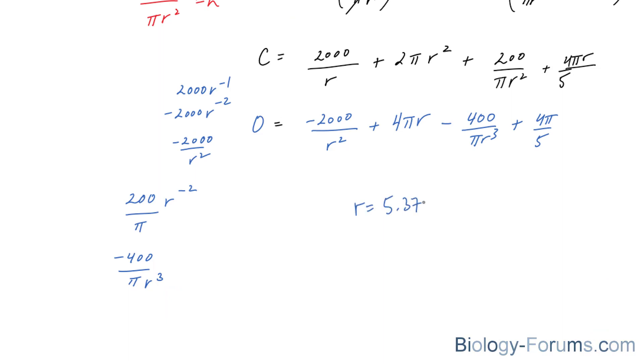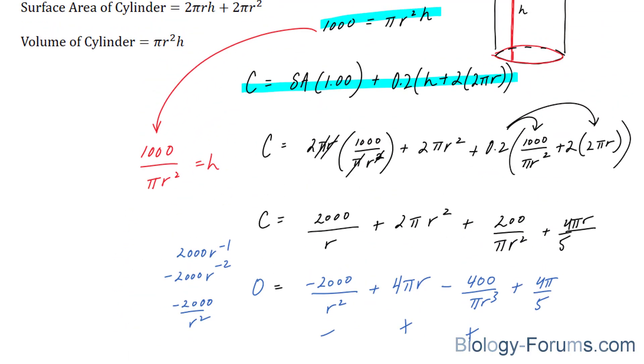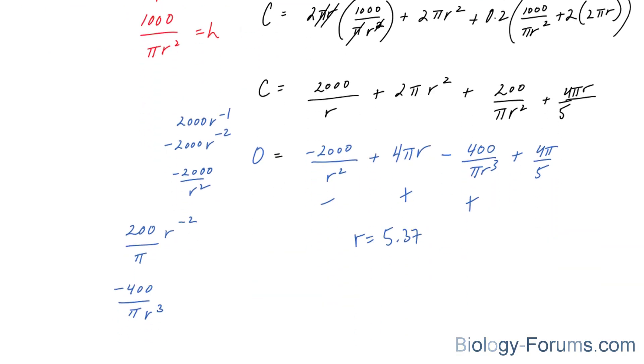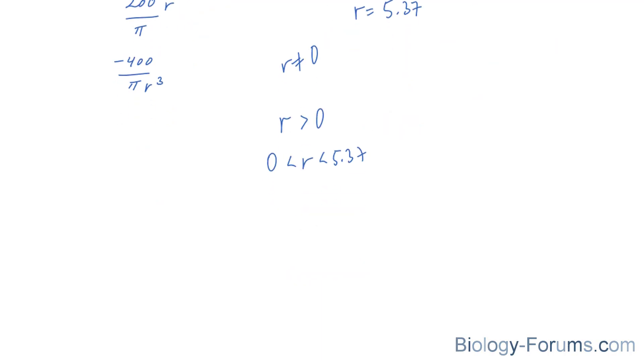That said, we can now find whether it is going to be a local minimum or a maximum. Keep in mind that there were restrictions in the original equation for C. The original equation for C looked like this, and according to this term, r cannot equal 0. We must also keep that in mind when using the closed interval method. That being said, we need to find values of r that are less than 0, values of r that are in between 0 and 5.37, and values of r that are greater than 5.37.